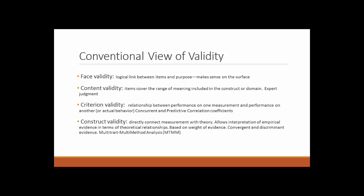The conventional view of validity can be one of four things. Face validity is the logical link between items and purpose, and this makes sense on the surface. Content validity means the items cover the range of meaning included in the construct or domain, as obtained by expert judgment. Criterion validity is the relationship between performance on one measurement and performance on another — concurrent and predictive correlation coefficients. Construct validity directly connects measurement with theory and allows interpretation of empirical evidence in terms of theoretical relationships.